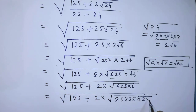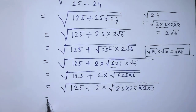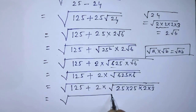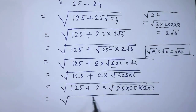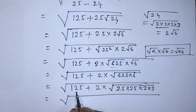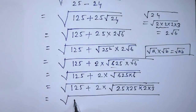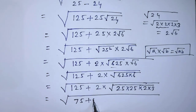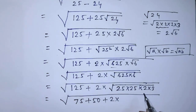Under this square root, in place of 125 we can write 75 plus 50, since 125 equals 75 plus 50. We also write 2 times the corresponding terms.